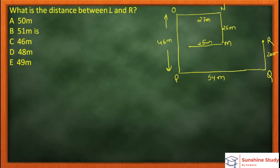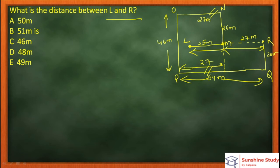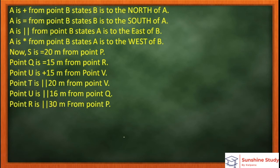Next question: what is the distance between L and R? The full horizontal distance is 54 meters. The distance up to here is 25 meters. The remaining is 27 meters because the total on each side from the midpoint is 27. So 27 remains, and 25 plus 27 equals 52 meters. Since 52 meters is not in the options, 52 meters is the answer.